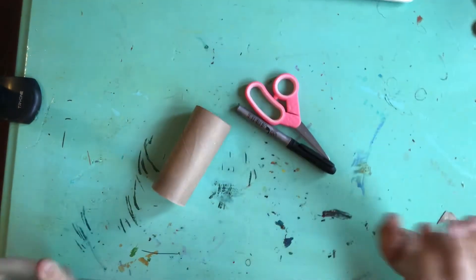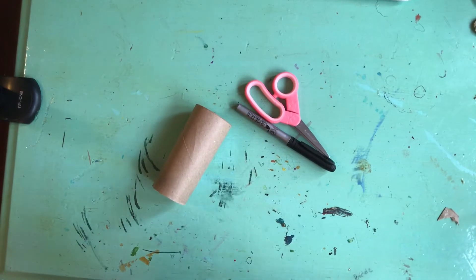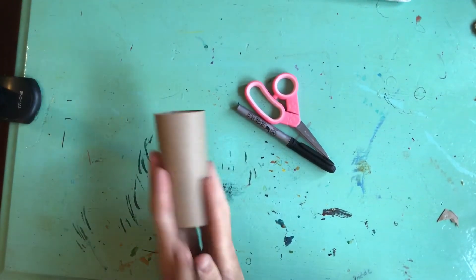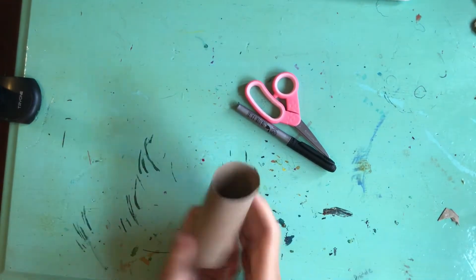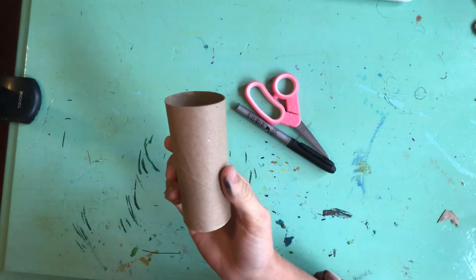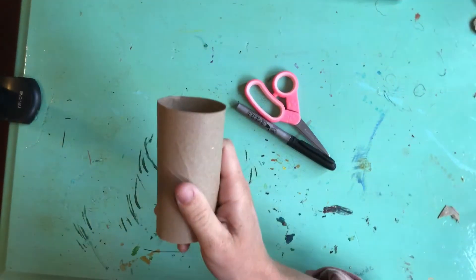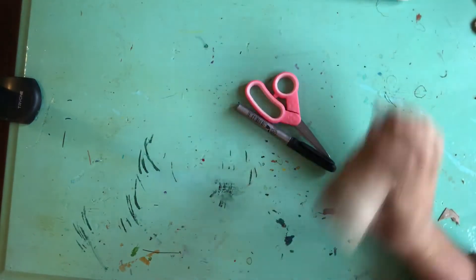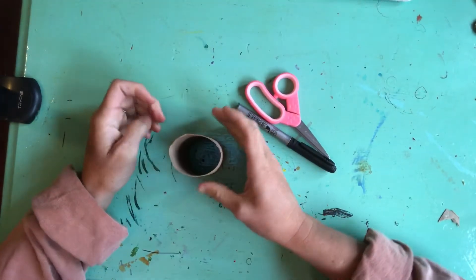Hey friends, so today we are going to be making a cat out of a toilet paper roll. So pause the video, go find one of these. Okay, now let's start. What you're going to do is get to the top.